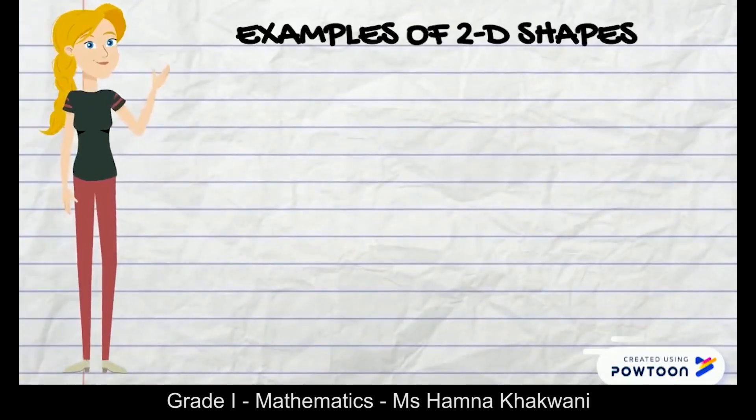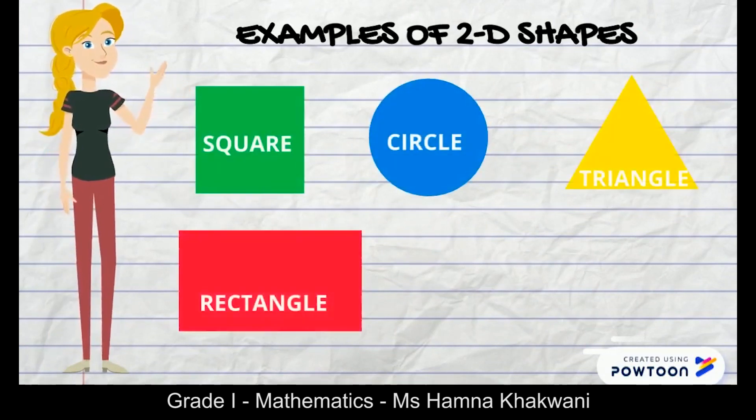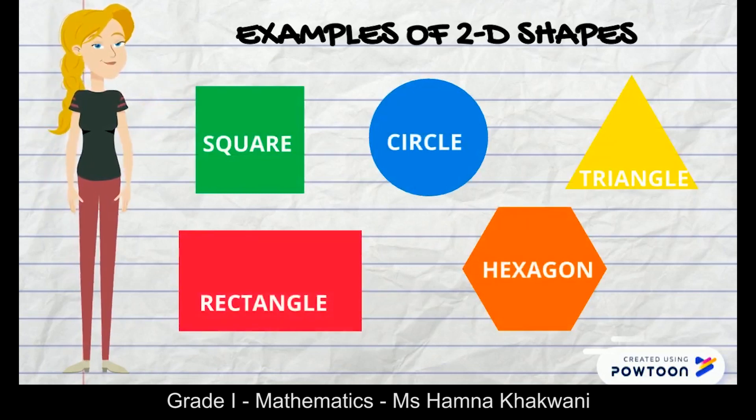Let's look into the examples of 2D shapes: square, circle, triangle, rectangle and hexagon.